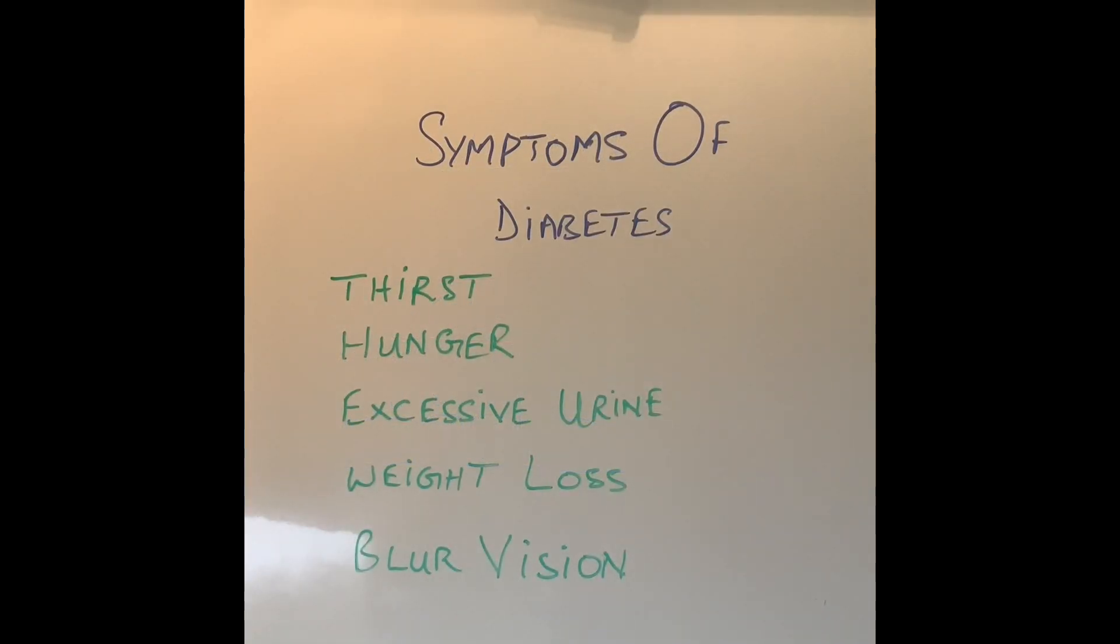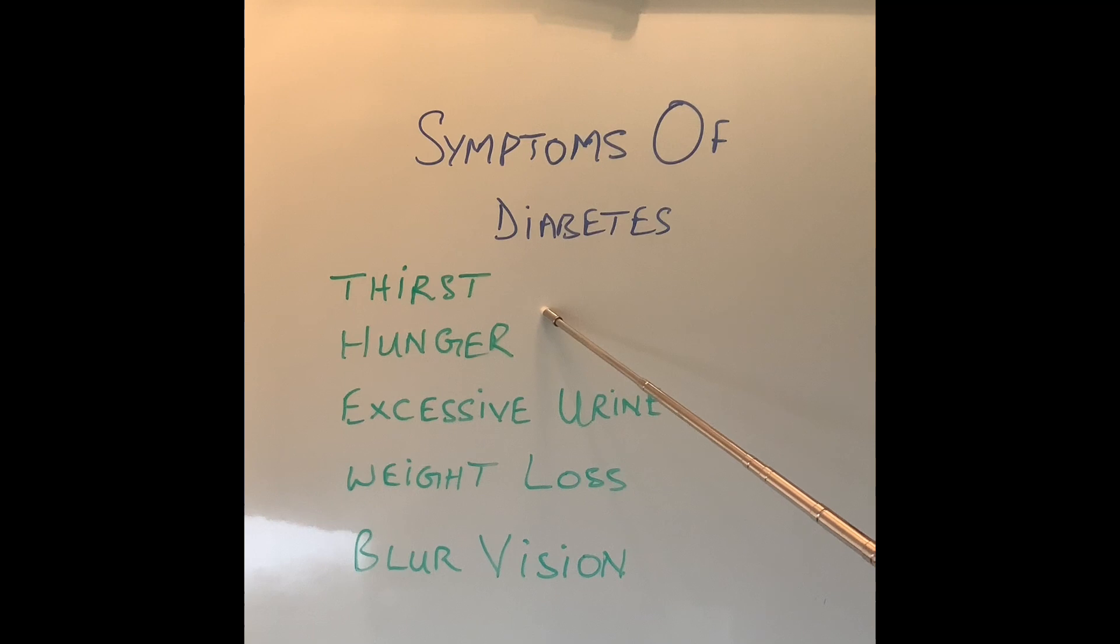So what are the symptoms of type 1 and type 2 diabetes? The symptoms are nearly the same. Patients feel very thirsty. They feel very hungry. Despite eating a lot they still continue to lose weight. They pass a lot of urine, constantly every hour. It's very watery urine as well. They start getting blurred vision.